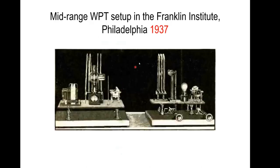In 1973, Tesla actually did a demonstration of his wireless power experiment in Philadelphia, at the Franklin Institute, and this setup is still available. What he had here is two resonators, and then wirelessly he transferred power from one resonator to the other to turn on a light bulb.